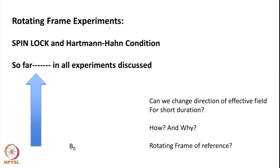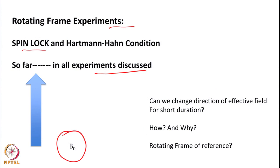We will build up those concepts today. We have to do these in the rotating frame of reference. Two experiments we are going to discuss today are spin lock and the Hartmann-Hahn matching condition. We have seen that till now we discussed how spins interact with the main magnetic field B0, and this interaction Hamiltonian is called the Zeeman Hamiltonian. B0 is in the Z direction and spins interact through this, giving different chemical shifts for different spins.